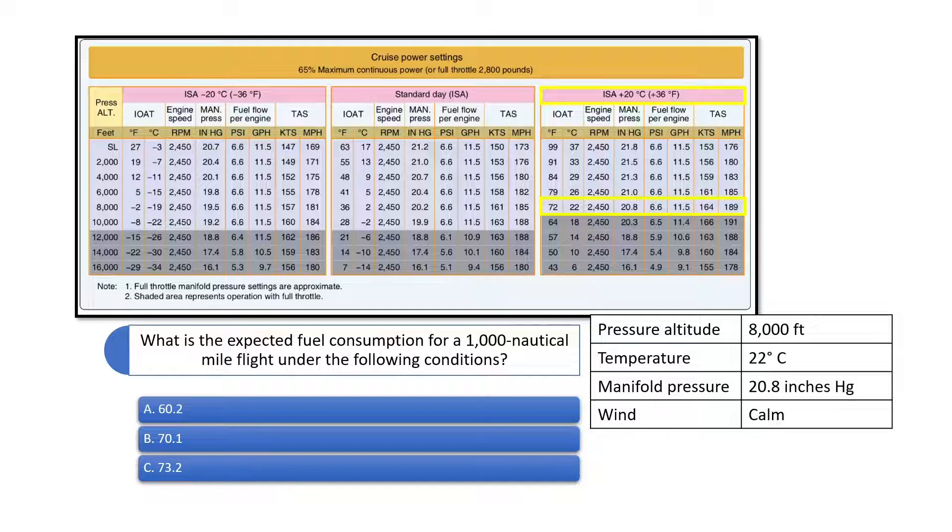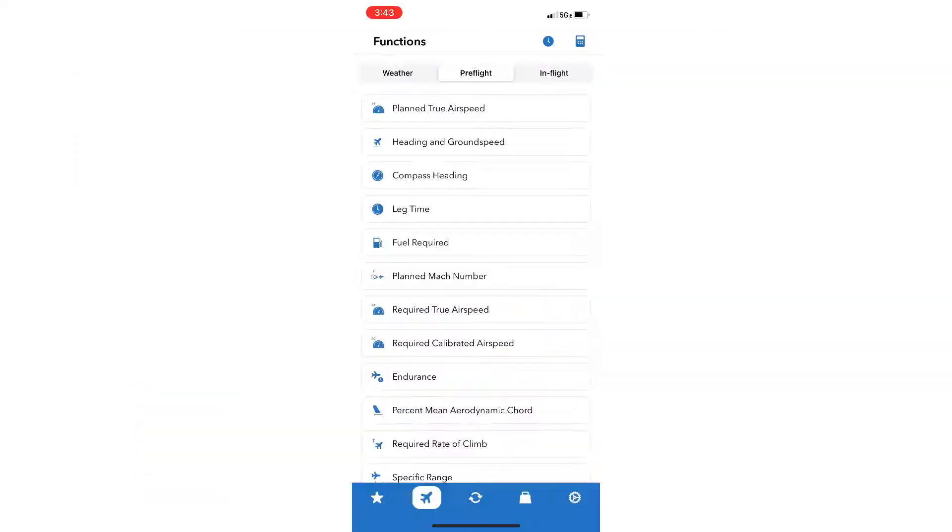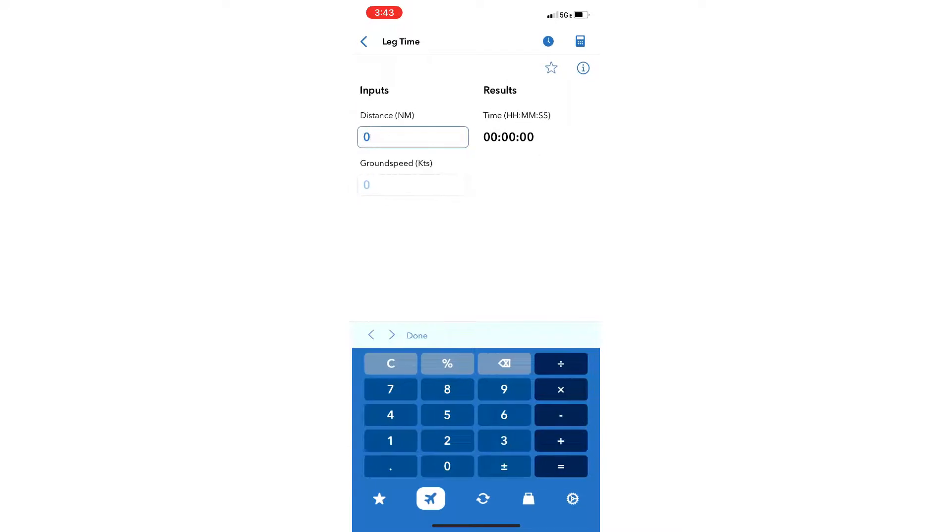Since the wind is calm, we do not need to adjust the ground speed. If there was a headwind or tailwind, we would need to adjust the ground speed accordingly. Use the leg time function and enter the distance of 1,000 nautical miles and ground speed of 164 knots to find the time en route of 6 hours, 5 minutes and 51 seconds, rounded up to 6 hours and 6 minutes.